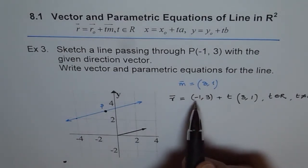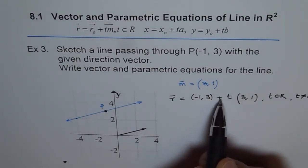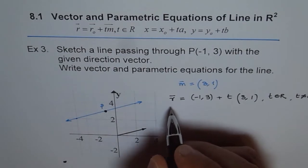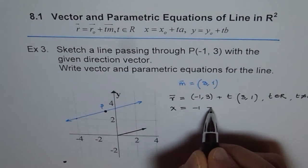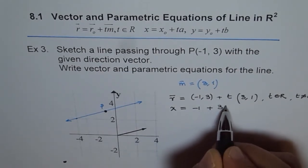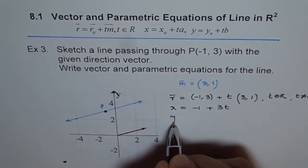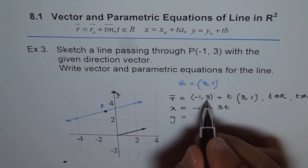So the x point for us is -1 plus 3t, right? So we can write x as equal to -1 plus 3t, and the y value is equal to 3...